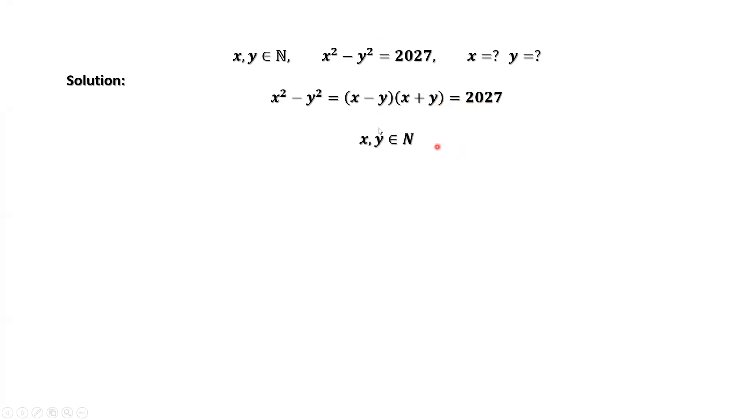Here, x and y both are positive integers. From this part, we can see that the right-hand side is positive. x and y are positive. x minus y must be positive. This means x is bigger than y.